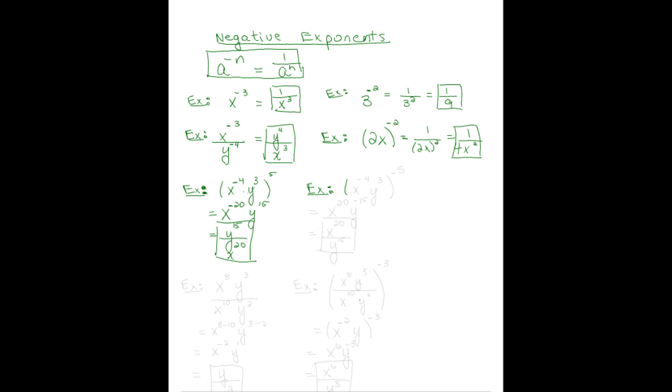We'll do a similar problem where the exponent is negative: x to the negative 4y cubed, all raised to the negative 5 power. Now you can take the reciprocal right now, but we're still going to have negatives, so it would be easier to just distribute first. X to the 20th power, y to the negative 15th power. X has a positive exponent, stays in the numerator, but the y we bring down to the denominator.